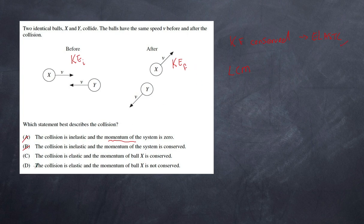Ball X has changed direction — momentum is a vector, so the momentum of X before is not the same as the momentum of X afterwards; therefore we cannot say X's individual momentum is conserved. Option C is also incorrect. Our only possible answer is D.